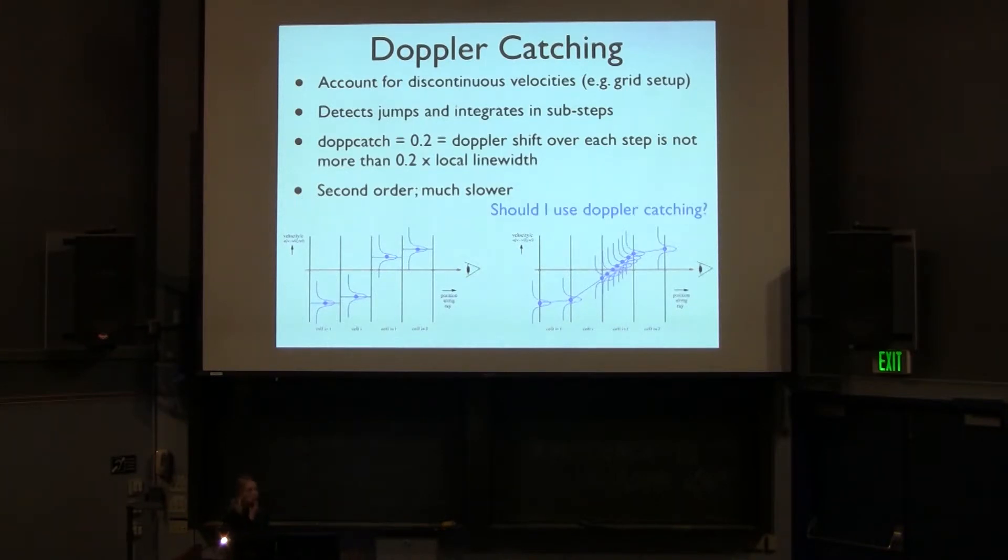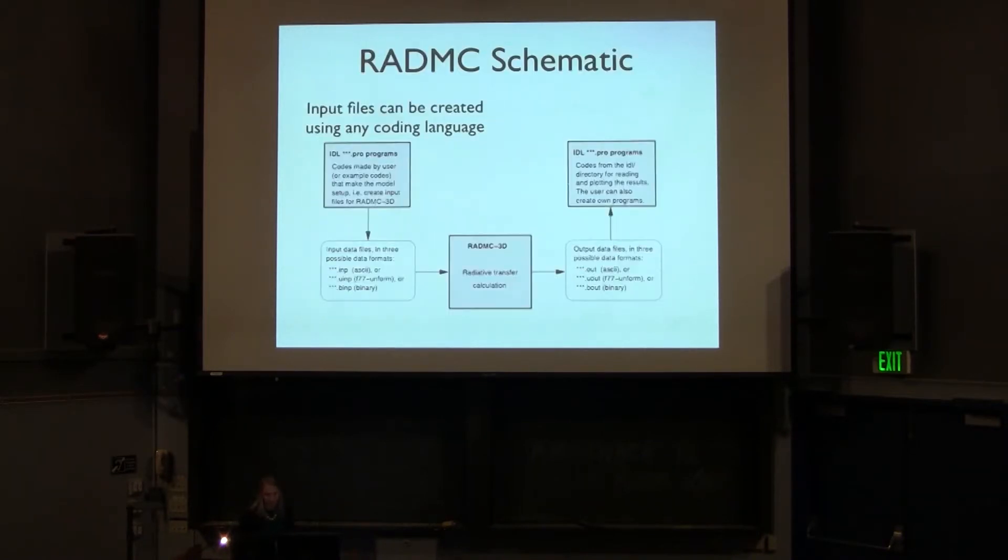So discontinuities can be quite bad here. What you can do is instead turn Doppler catching on and basically interpolate between these different velocities in the grid cell. So this is basically going from a kind of first order method to a second order method. Then there's a follow-up question which you might be wondering. Should I be using Doppler catching in my problems? And one thing is, well, it's second order. It's much slower. But there's a second issue is that your problem might have shocks. If your problem has strong shocks, then the velocity discontinuities on the grid are in fact real. And when you turn this on, you're basically interpolating and smoothing out your shocks.